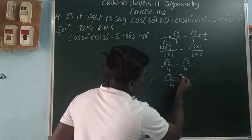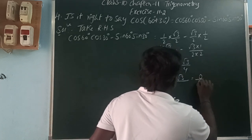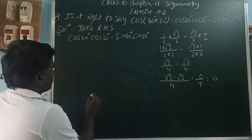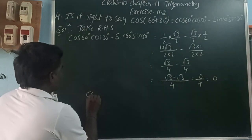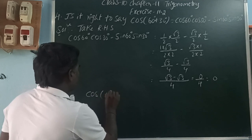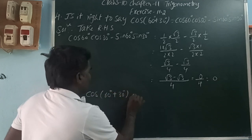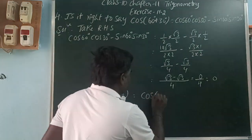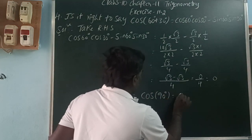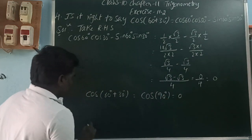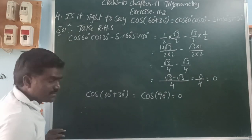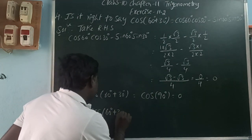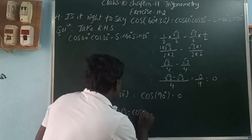These two are like fractions, so subtract with the common denominator: root 3 minus root 3 is 0 by 4, which equals 0. Now cos(60+30) = cos90 = 0. Therefore yes, it is right that cos(60+30) = cos60·cos30 minus sin60·sin30.